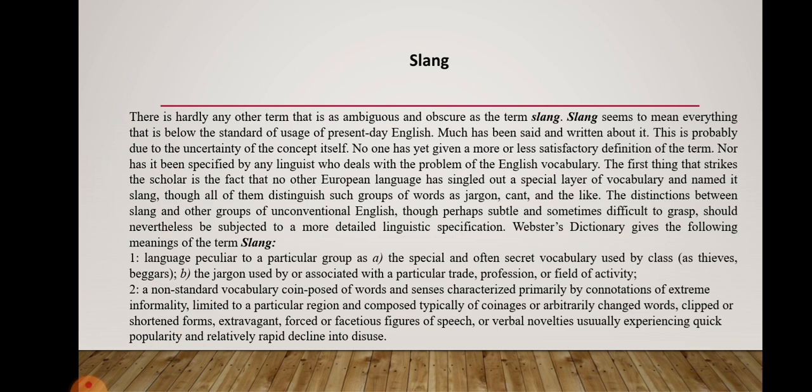Webster's dictionary gives the following meanings of the term slang. First, language peculiar to a particular group, such as the special and often secret vocabulary used by a class as thieves or beggars, or the jargon used by or associated with a particular trade, profession, or field of activity. Second, an unstandard vocabulary composed of words and senses characterized primarily by connotations of extreme informality, limited to a particular region, and composed typically of coinages or arbitrarily changed words, clipped or shortened forms, extravagant or facetious figures of speech, or verbal novelties, usually experiencing quick popularity and relatively rapid decline into disuse.